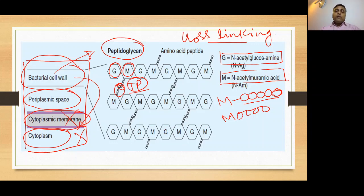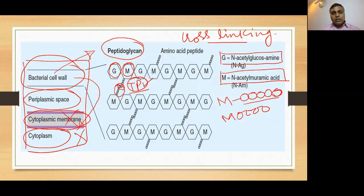Whenever we talk about different drugs, one group — the beta-lactam antibiotics, which are cell wall synthesis inhibitors — use their beta-lactam ring to block the transpeptidation reaction, thus blocking cross-linking and decreasing the strength of the bacterial cell wall.